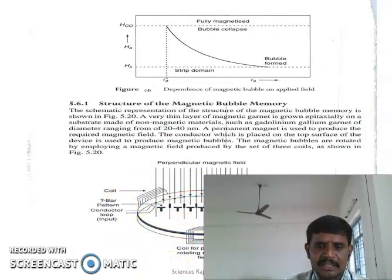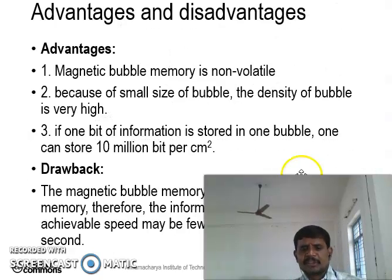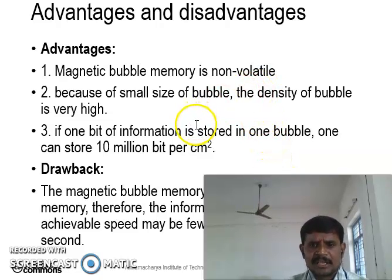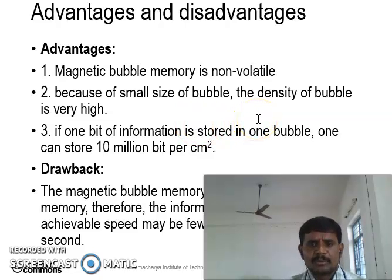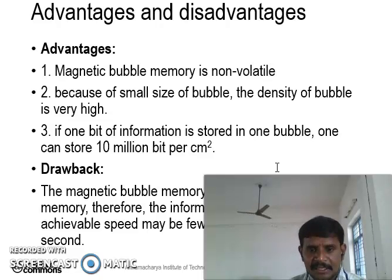The magnetic bubble memory has several advantages. The magnetic bubble memory is non-volatile. Because of the small size, the density of bubble memory is very high. If information is stored in one bubble, it can store 10 million bits per centimeter square.